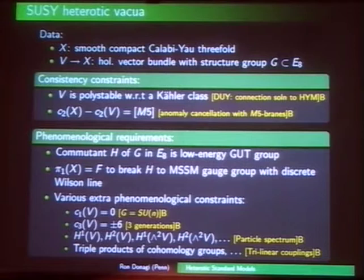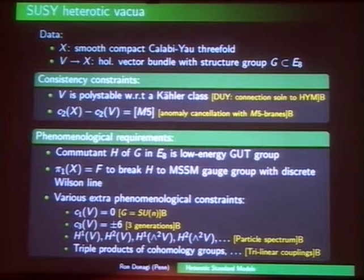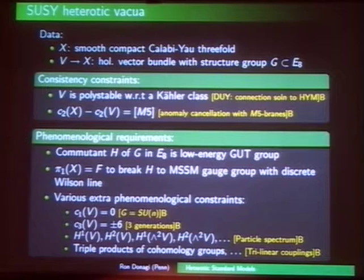We want the commutant H of G to be the GUT group — SU-5 or SO-10 are the most obvious candidates. We also need to break the GUT to the standard model group, which can be done using fluxes or discrete groups. In the heterotic theory, fluxes don't work — they work in F-theory. In this talk I'll stick to the heterotic models where you need a finite group to break the symmetry.